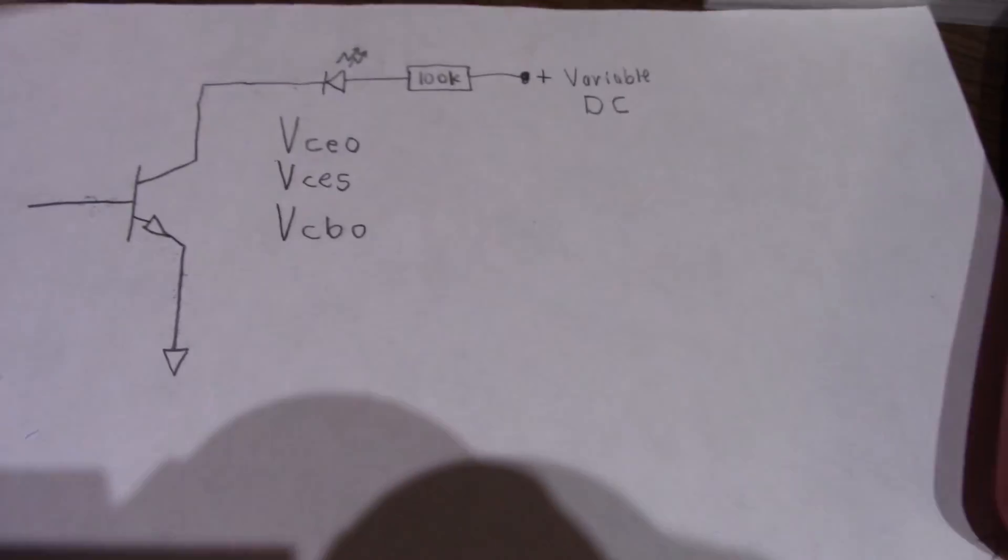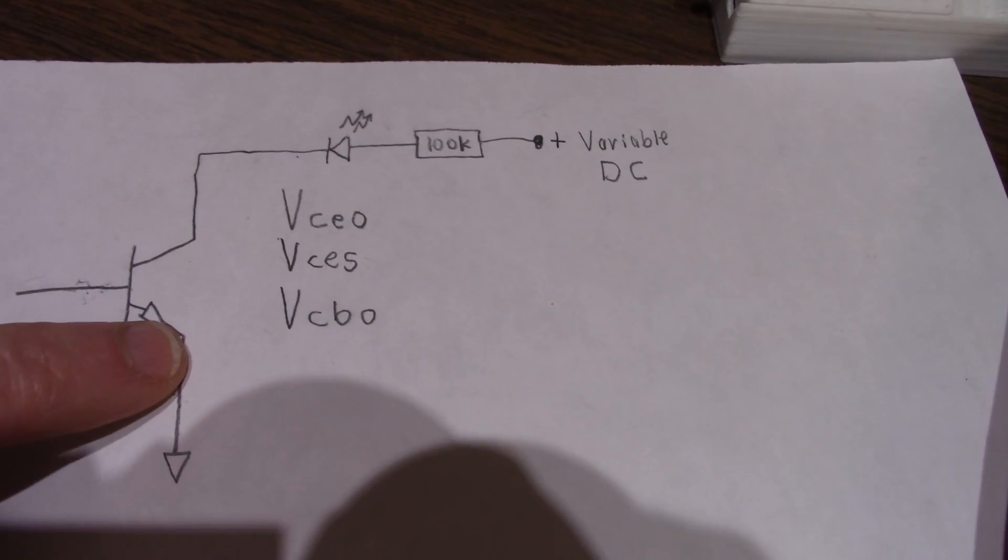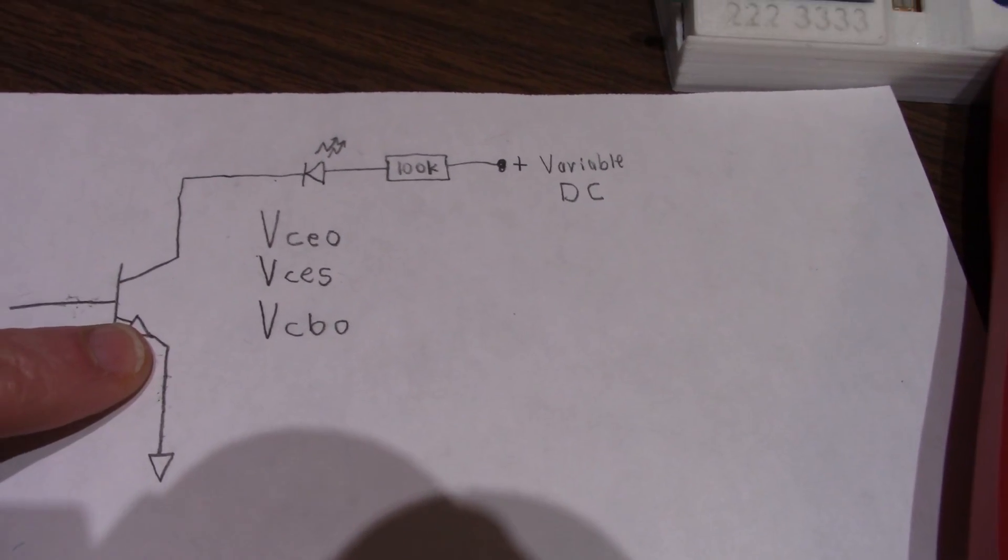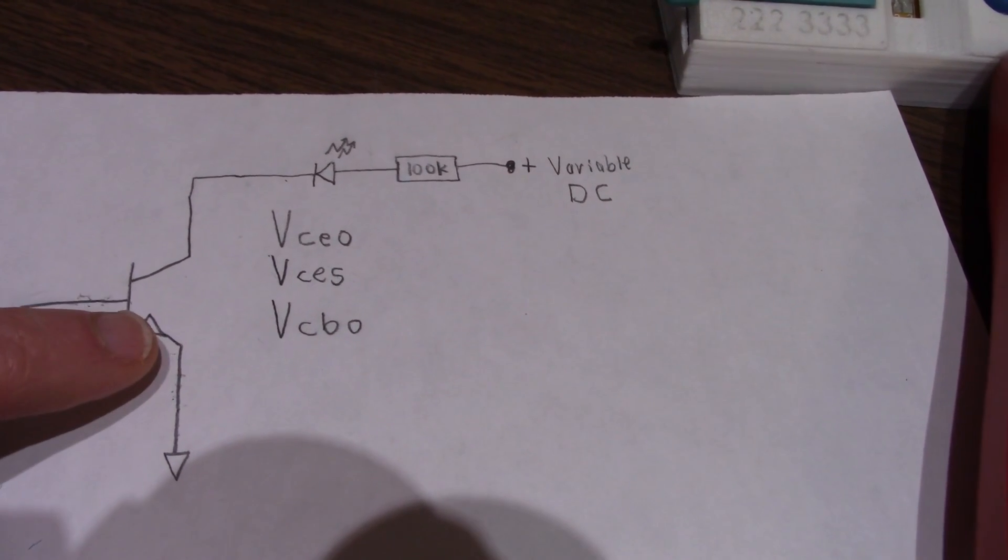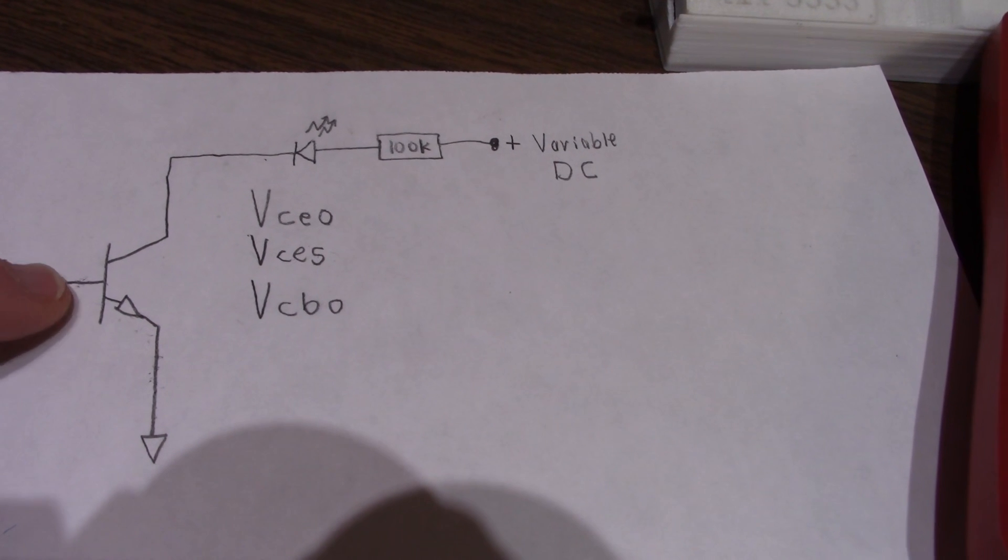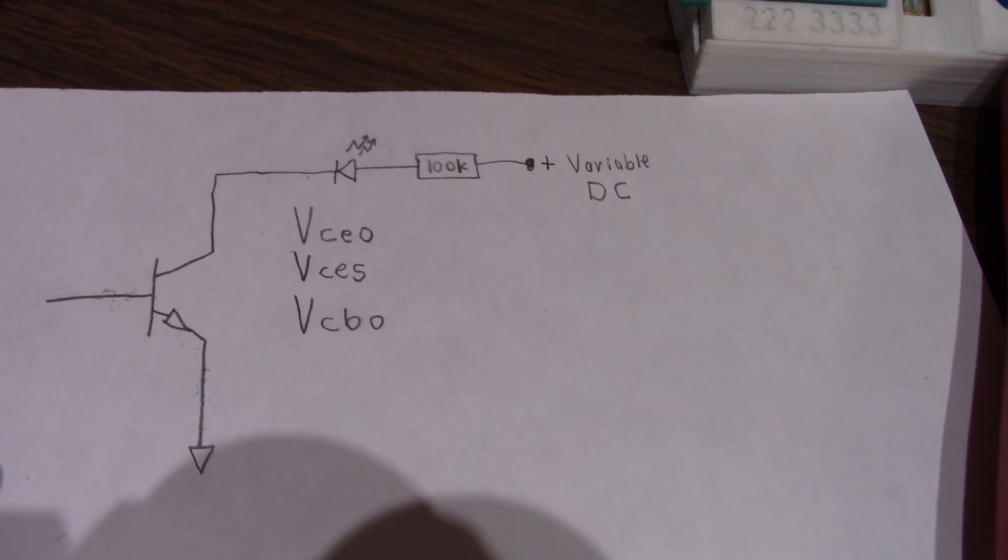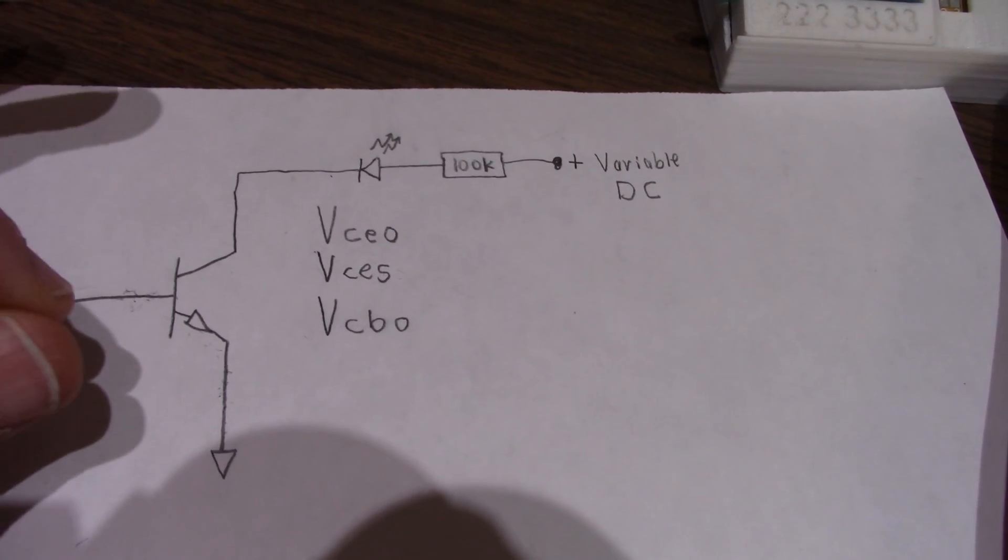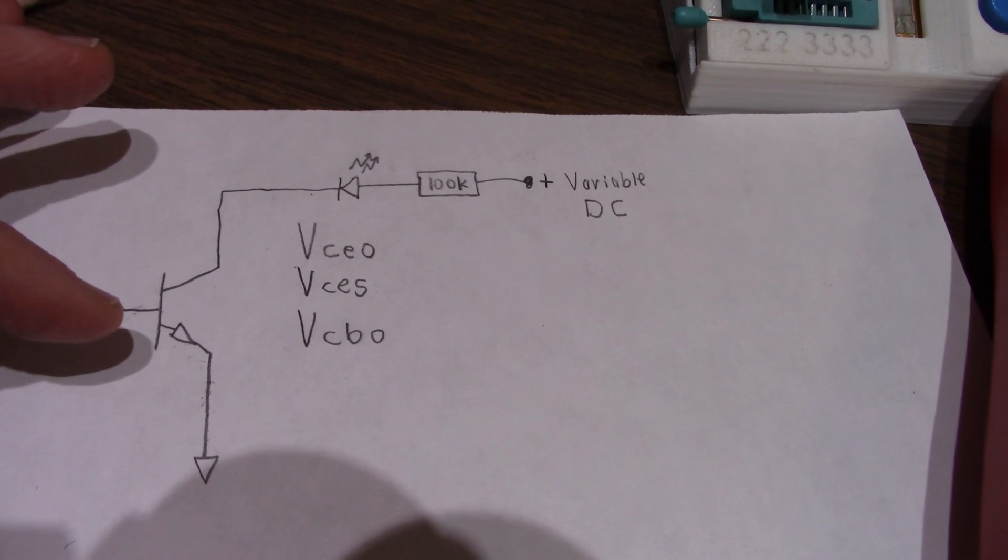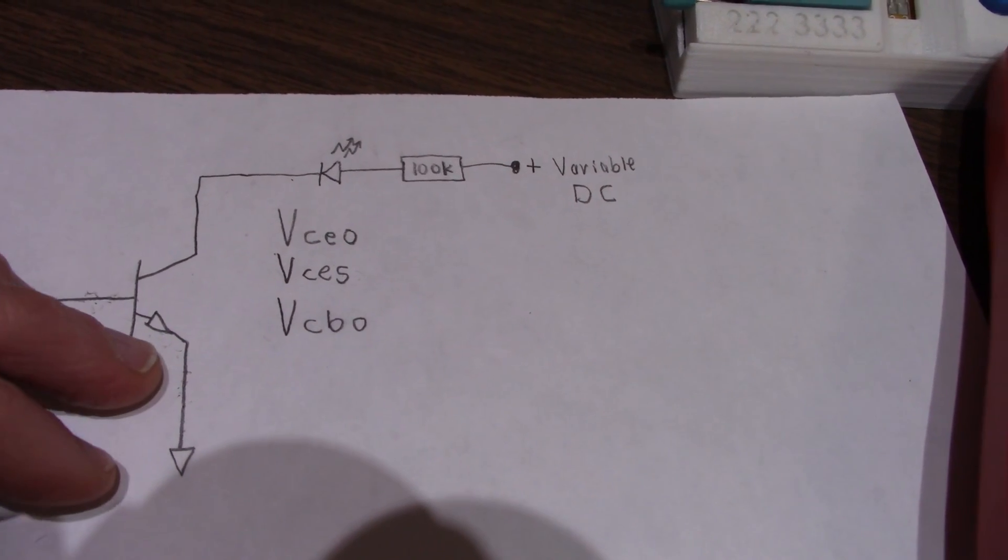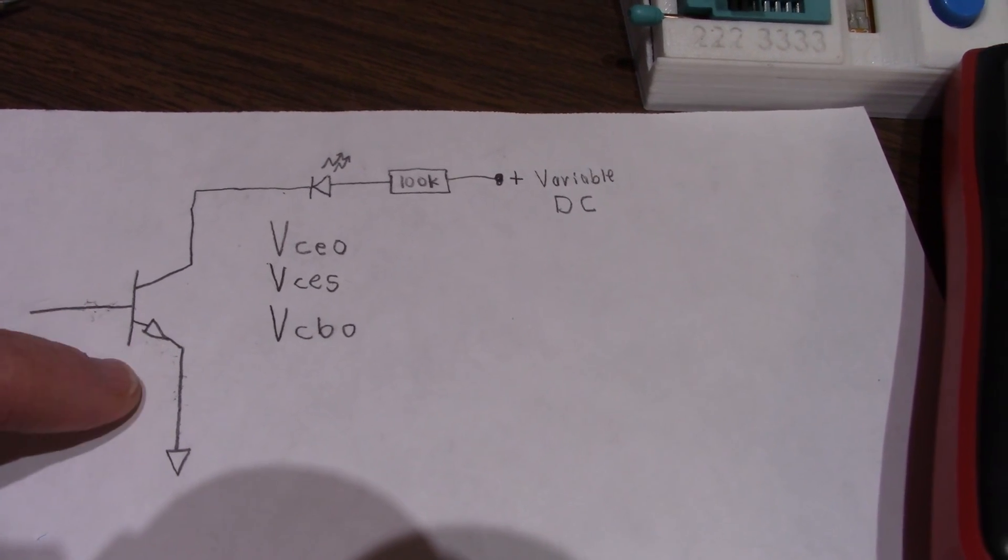Now, a way to damage a transistor is to reverse bias this base emitter junction. This voltage is usually between 5 and 8 volts. It'll start conducting between 5 and 8 volts. And if that happens, the transistor will be slightly damaged. You'll lose some gain, and it might even make the transistor a little bit more noisy. So, that's one thing you want to be careful of.